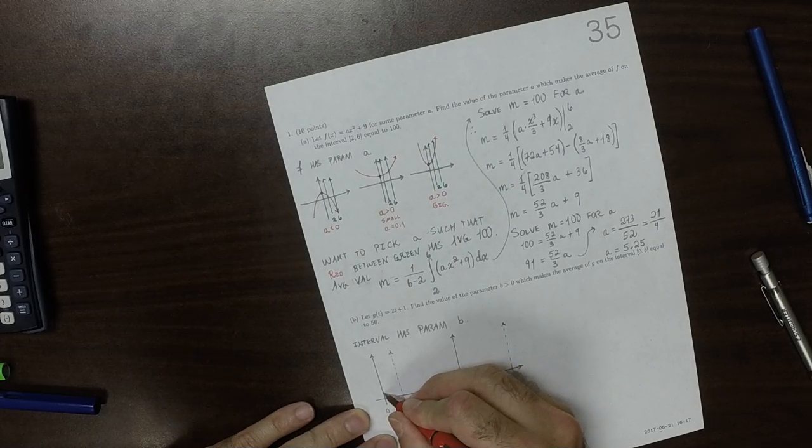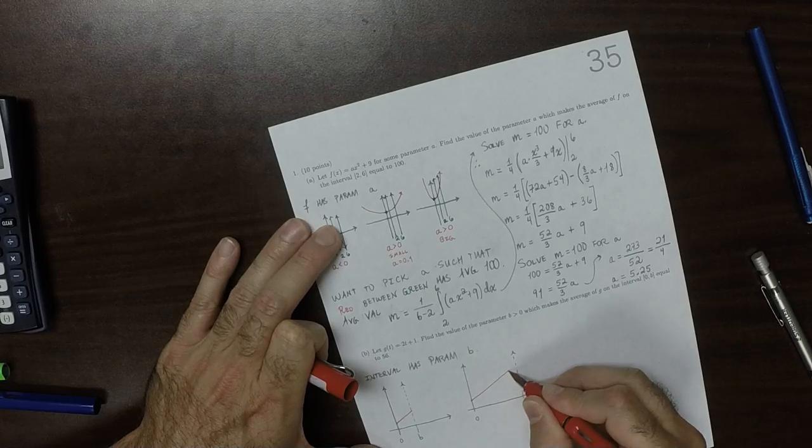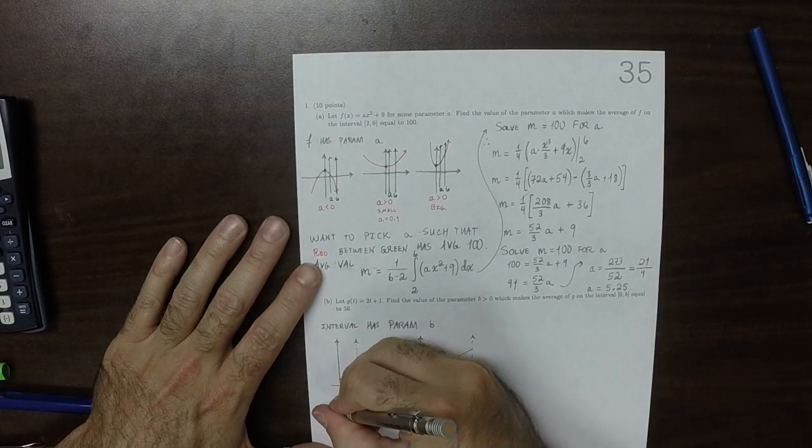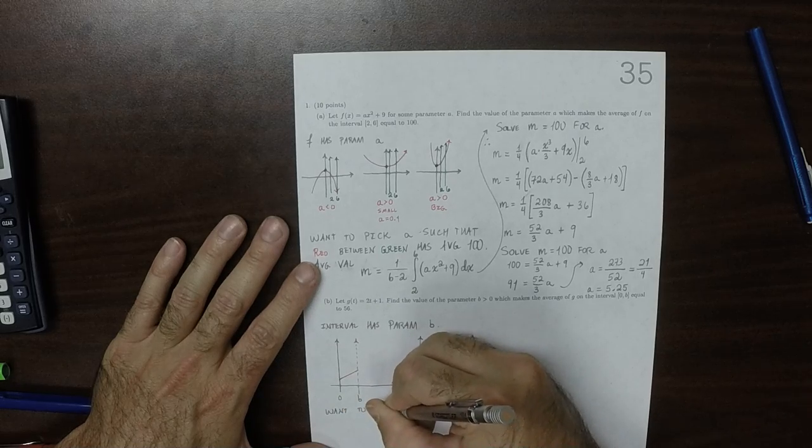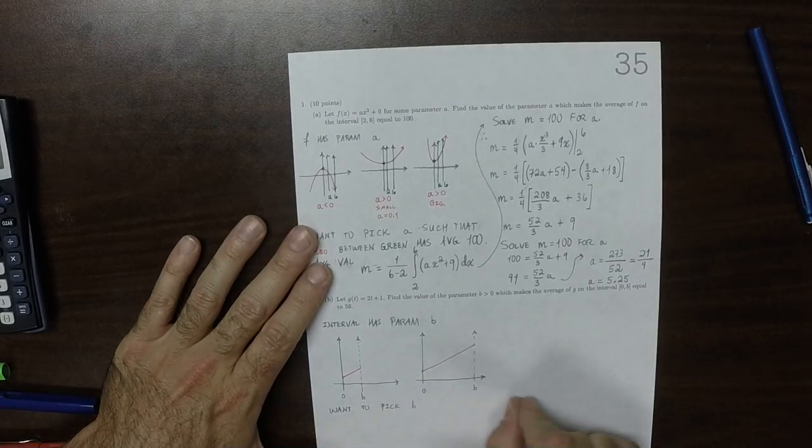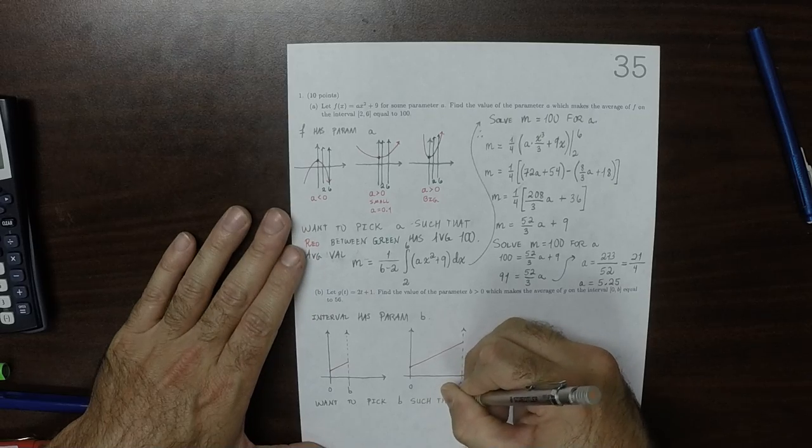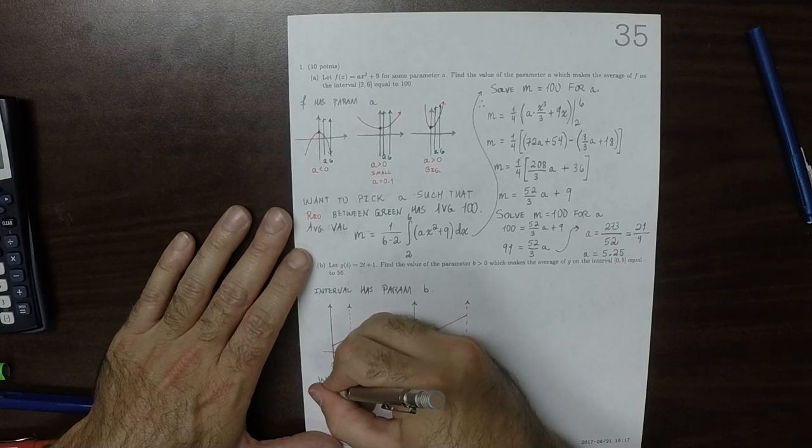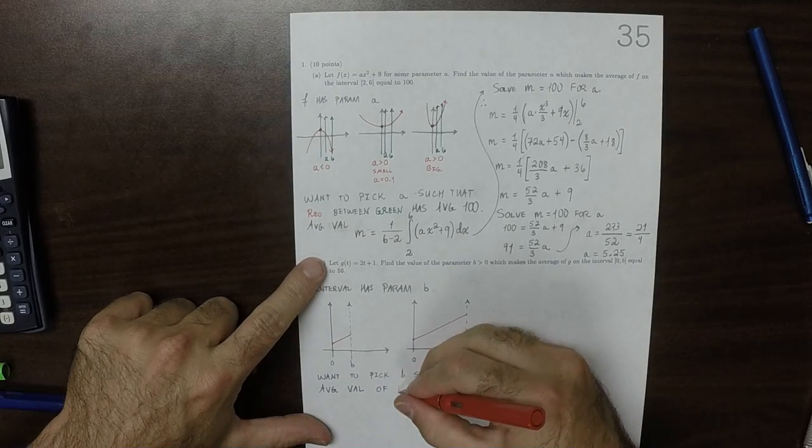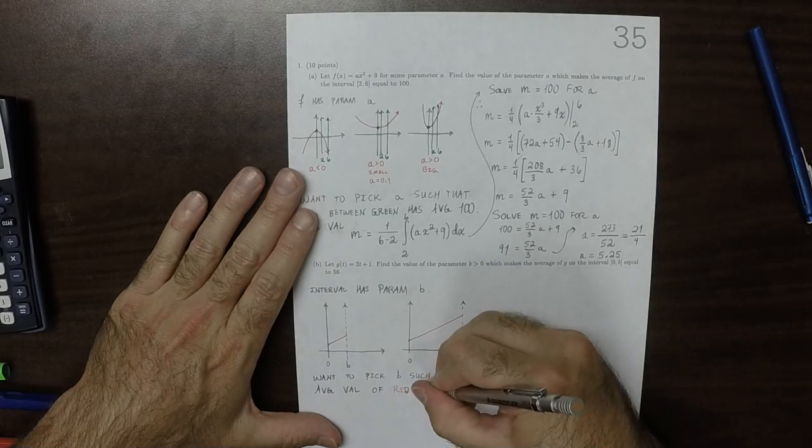So that means that this function looks like this. So we want the average value. We want to pick B, that is to say, the location of this fence post such that the average value of the red, that is to say, the average height of the red is 56.